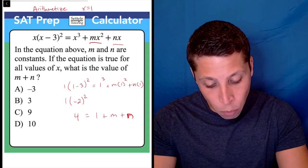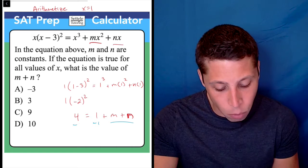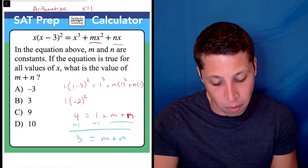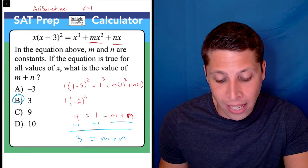Notice what we want is m + n, so I don't care what each of these is individually. All I have to do is subtract 1 from both sides to get that 3 equals the sum of the two of them together. And that is my answer. So this is a perfectly valid way to arithmetize and get this question right.